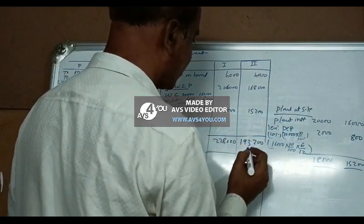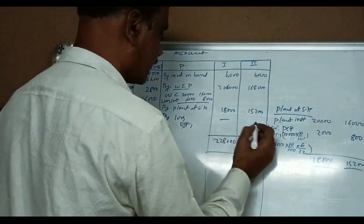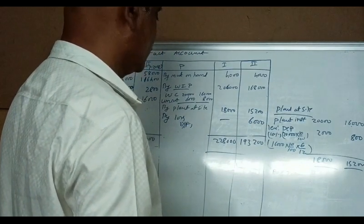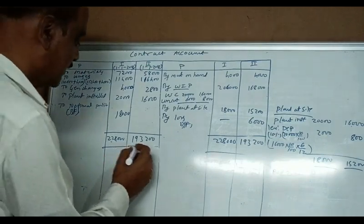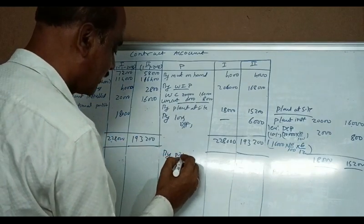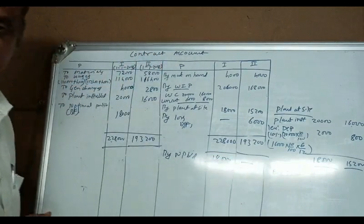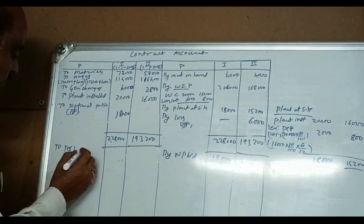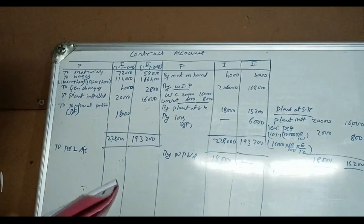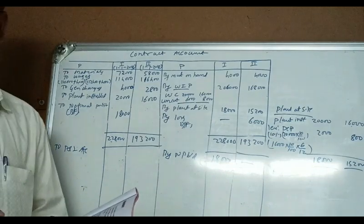For the profit and loss account, the formula is: one-third of notional profit multiplied by cash received divided by work certified. For the first contract, contract price is four lakhs and work certified is two lakhs — that is half the contract price. So we apply the two-thirds formula.